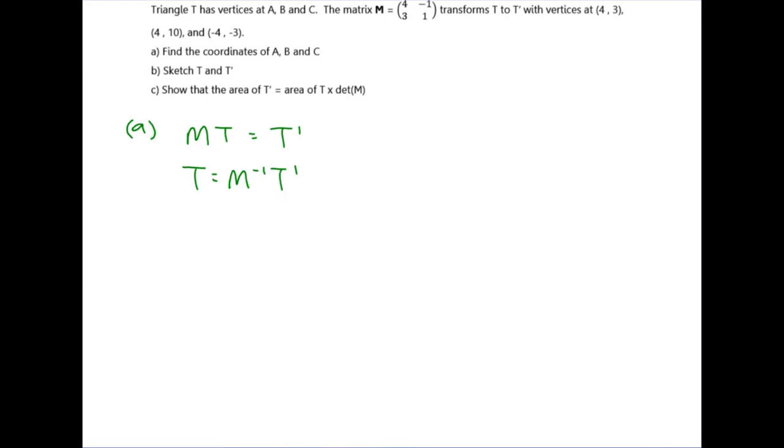I'm going to do this all together in one big matrix with the coordinates of the image, but you can do them individually if you like. So this is 4 minus 1, 2, 1, minus 1, times by the coordinates of 4, 3, 4, 10, and minus 1, minus 3. With it being a purely numerical matrix, it is absolutely fine for you to type that into your calculator and get the answer out.